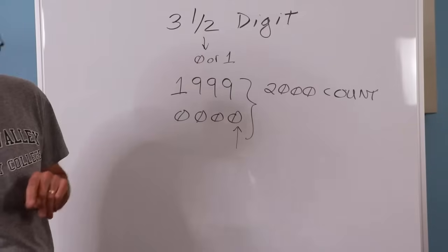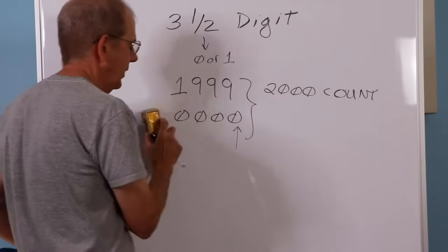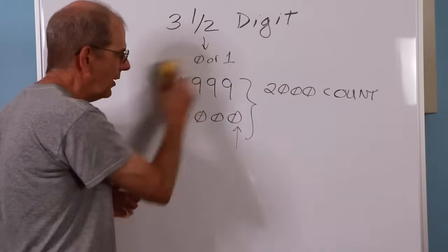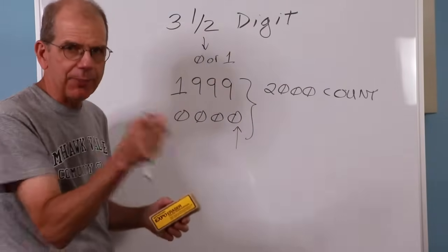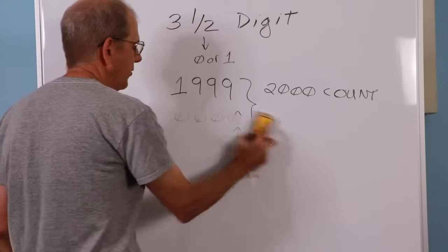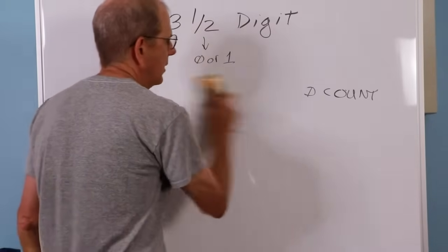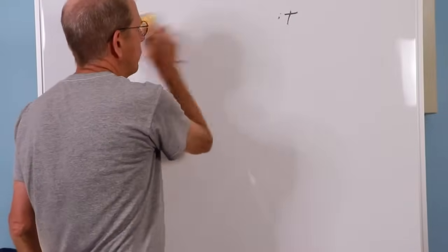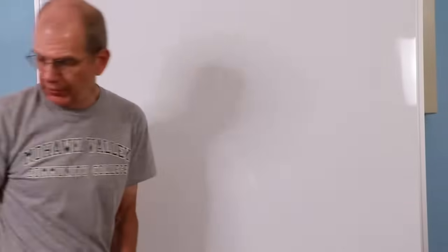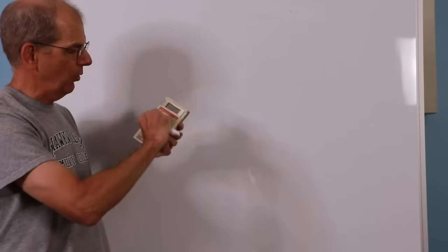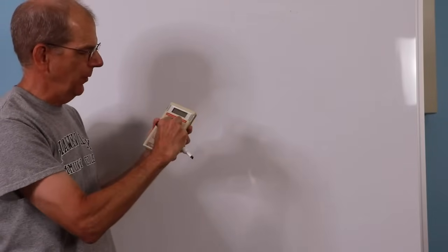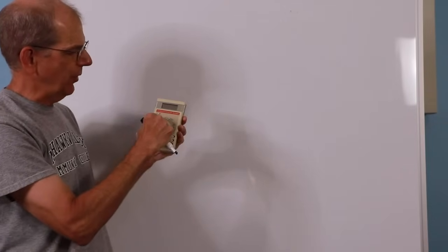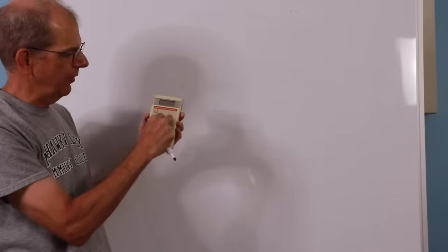So, one thing that we need to do is determine where in this window the decimal point is. Because these meters have typically some kind of range selector on it besides a function selector. So on this meter right here, we have a rotary knob. This is fairly typical.